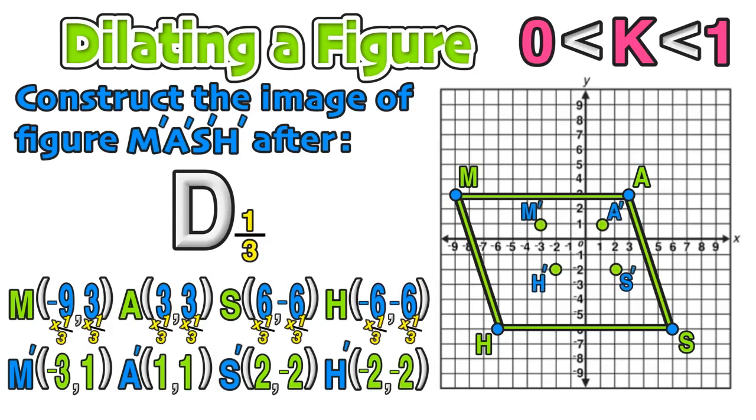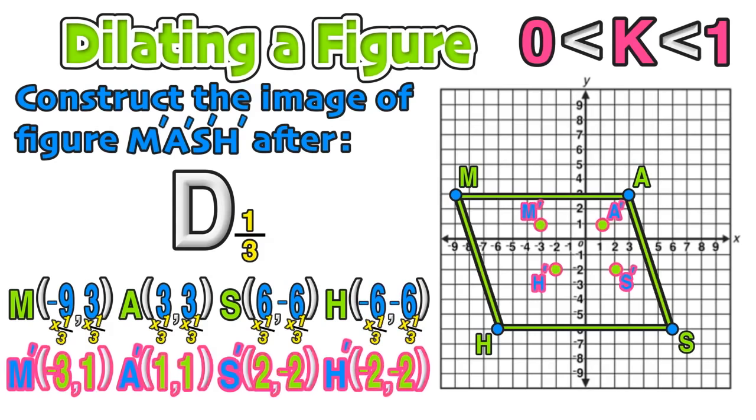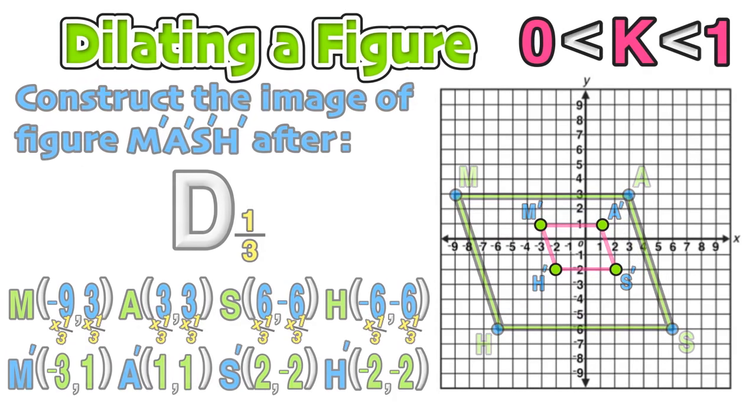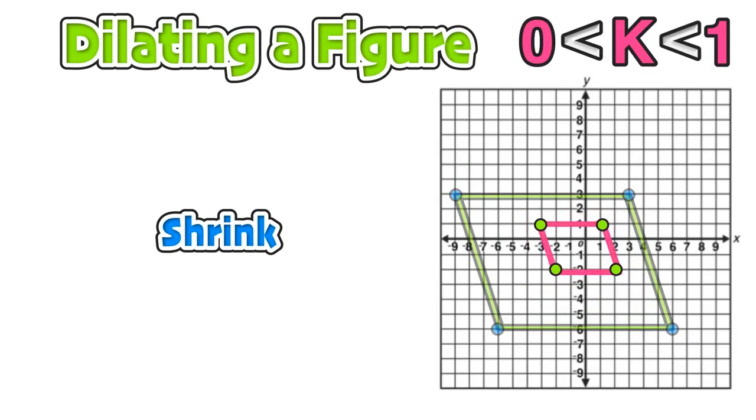We can now plot those new points and construct M prime, A prime, S prime, H prime, the image of the original figure after the dilation. So now we can better understand that when the scale factor K is greater than 0 but less than 1, the image is shrunk down to a smaller size.